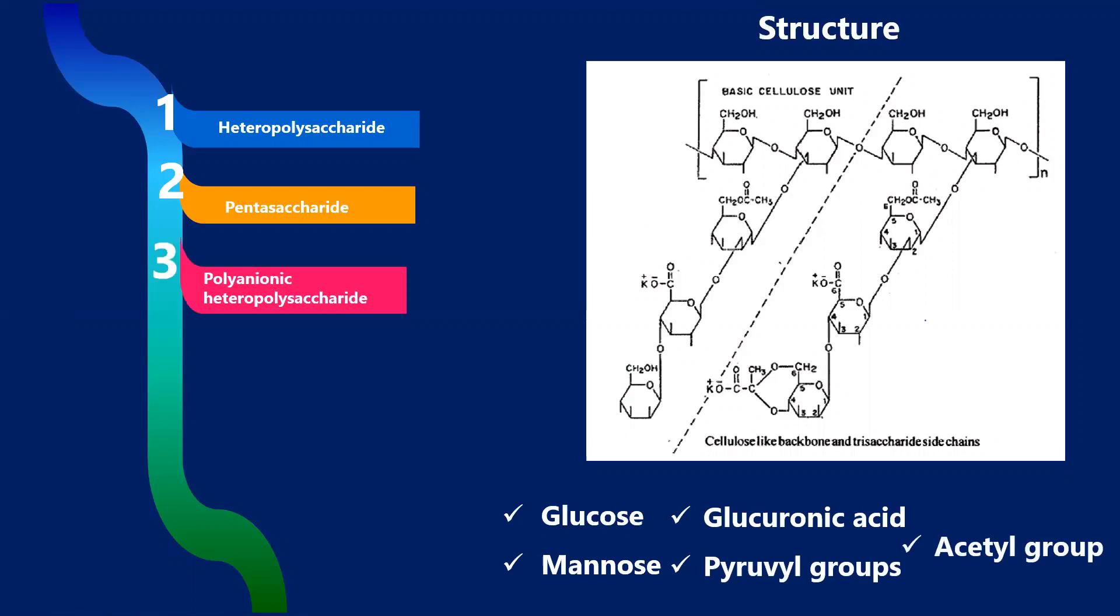Now acetyl and pyruvyl both have negative charge, and thus xanthan is said to be a polyanionic heteropolysaccharide. It has the molecular weight in the range of 2 × 10^6 to 10^7 Daltons. It is highly viscous, water soluble, and non-toxic.